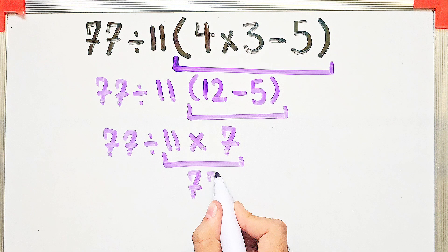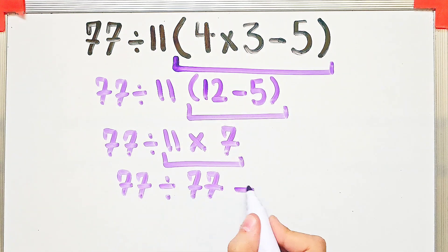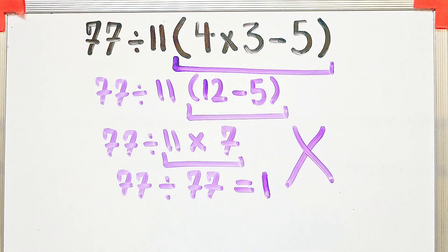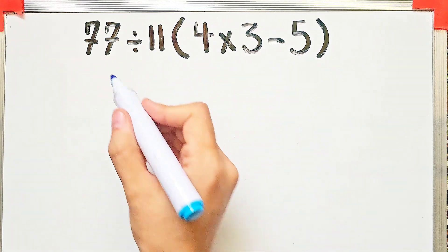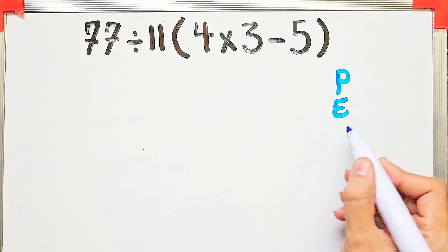11 times 7 equals 77, and 77 divided by 77 equals 1. But this answer is definitely wrong. Let's solve this question step by step together.